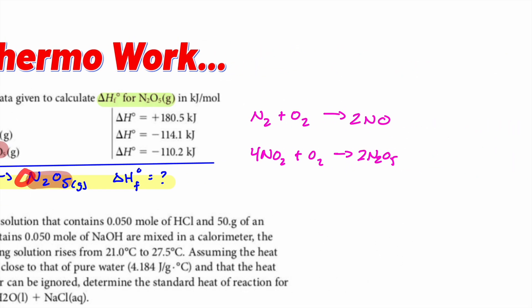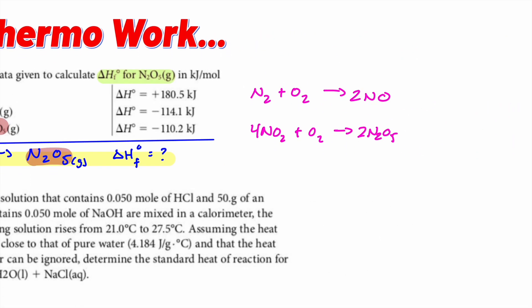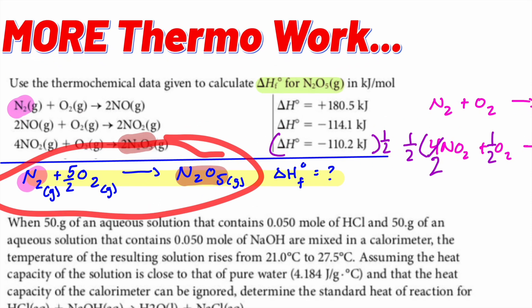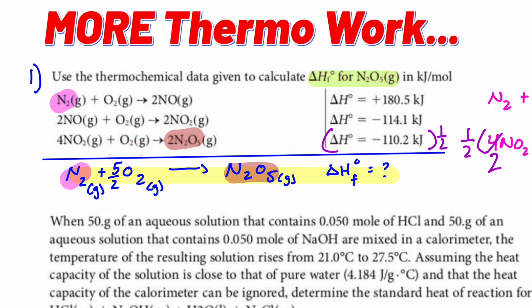I want one N₂O₅ but I have two, so I'm going to take half of that equation. Four becomes two, two becomes one, one-half O₂ becomes one. For the middle equation, I need to find something that isn't in the final equation — I see NO here and NO here, but not in the final.